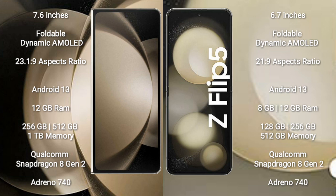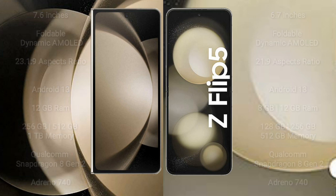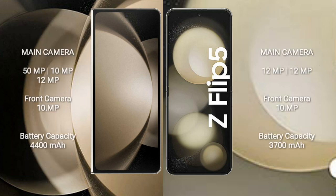The Samsung Galaxy Z Flip 5 comes with 8GB RAM and 256GB or 512GB internal storage options. It is also powered by the Qualcomm Snapdragon 8 Gen 2 processor with an Adreno 740 GPU. The Samsung Galaxy Z Fold 5 features a rear triple camera setup: 50MP